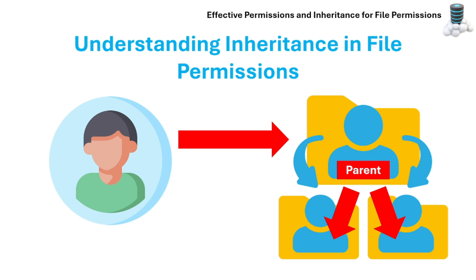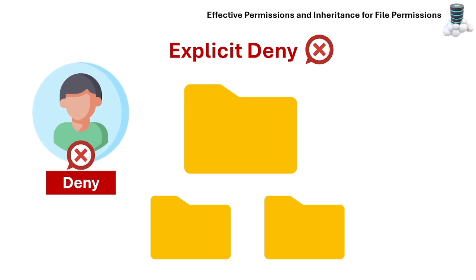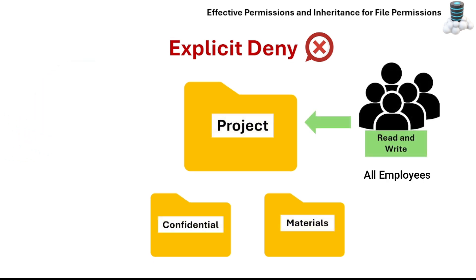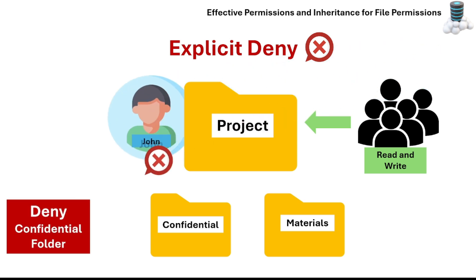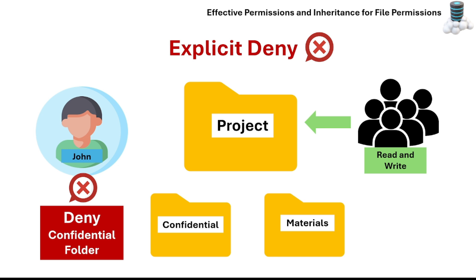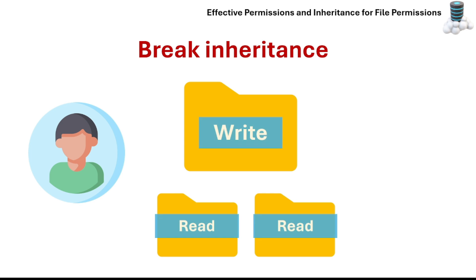In NTFS permissions you can allow or deny access to files and folders. Explicit deny is when you manually set a deny permission for a user or group, and it overrides any inherited or allowed permissions. For example, all employees have access to a shared project files folder, but a specific subfolder called Confidential contains sensitive financial data that should not be accessed by John, a member of the employees group. This is where explicit deny comes into play. You can also break inheritance by disabling permission inheritance and setting new permissions manually.